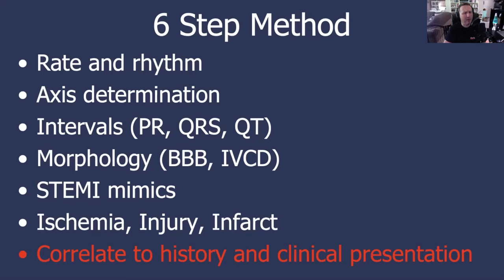In step five, we're going to rule out some of the mimics of ST segment elevation — conditions that cause ST segment elevation other than acute myocardial infarction on the 12-lead ECG. And then finally, in step six, we're going to look for ischemia, acute injury, and infarct. Some of you might say there's a seventh step, and there is — correlate to history and clinical presentation.